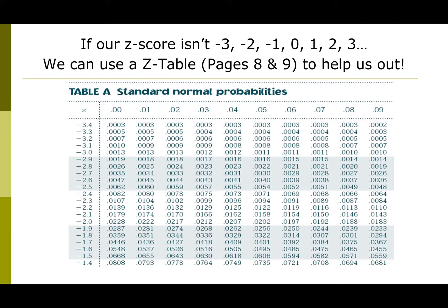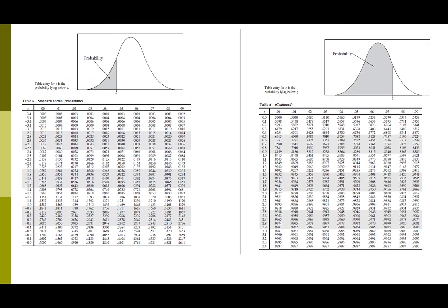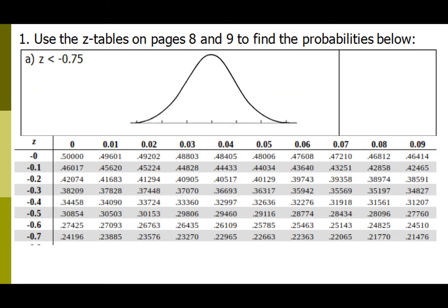On the side of the z-table it gives us the first digit after the decimal place, and then we look over to the right to find the column we need. You have the negative side and the positive side of the z-table. Notice that the shading is always to the left, which is important because sometimes we want what's to the right, so we'll need to subtract.